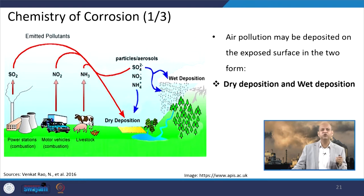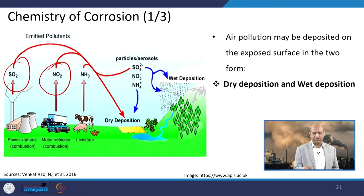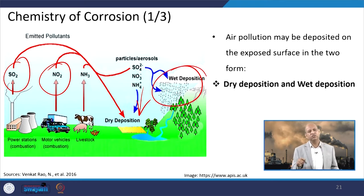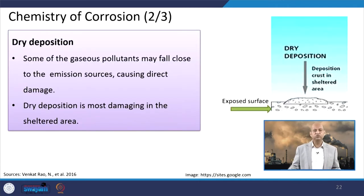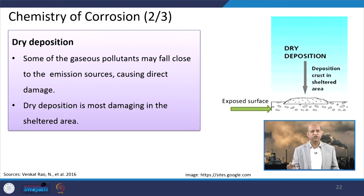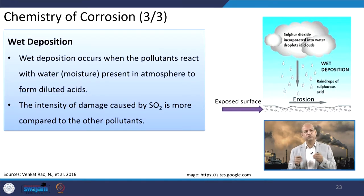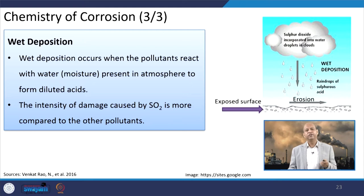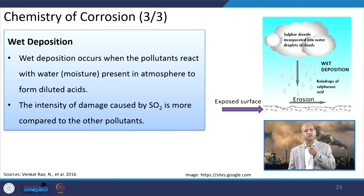When we talk about the chemistry of corrosion, emissions of sulfur dioxide, nitrogen dioxide, ammonia, etc. go into the air and then dry deposition or wet deposition occurs. This leads to acid rain formation and an acidic effect, which produces the corrosion effect. Dry deposition happens simply because of gravity — particulate matter and even gases descend to the surface. Wet deposition through precipitation is more dangerous for building material if there is high SO2 concentration in the air that gets converted into sulfuric acid.